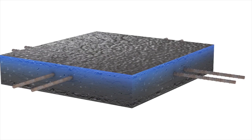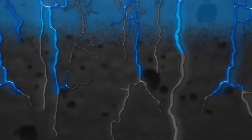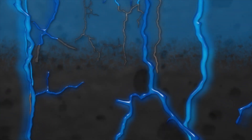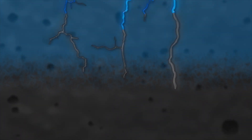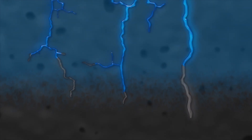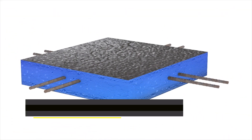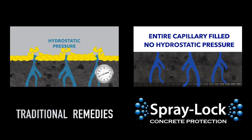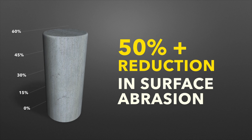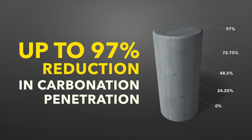Spray Lock is also uniquely able to strengthen and densify the concrete as it accelerates the calcium silicate hydrate reaction that takes place within the capillary spaces in the concrete. It changes the normal calcium silicate hydrate reaction gel into a stronger compound within the pore spaces. Adding Spray Lock into the concrete capillaries can strengthen and densify concrete by up to 15%. By filling rather than just blocking the capillaries, it also hardens the surface paste, making it resistant to abrasion. Independent tests show a reduction in surface abrasion of concrete surfaces by over 50%.